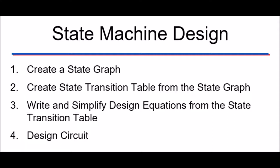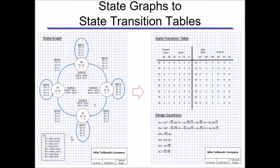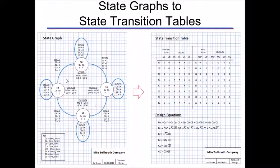Here are the steps for designing your state machine. First, you create something called a state graph. Then we make a state transition table, which really looks just like a truth table. Then you write an equation from that table, and finally you design the circuit. On the left is what a state graph looks like — this particular graph has four different states: state 0, state 1, state 2, state 3. You can have more states if you want.